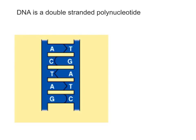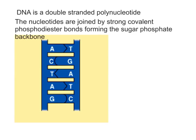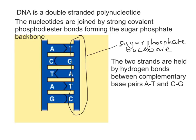DNA is a double-stranded polynucleotide. The nucleotides are joined by strong covalent phosphodiester bonds forming the sugar phosphate backbone. The two strands are held by hydrogen bonds between complementary base pairs A to T and C to G.